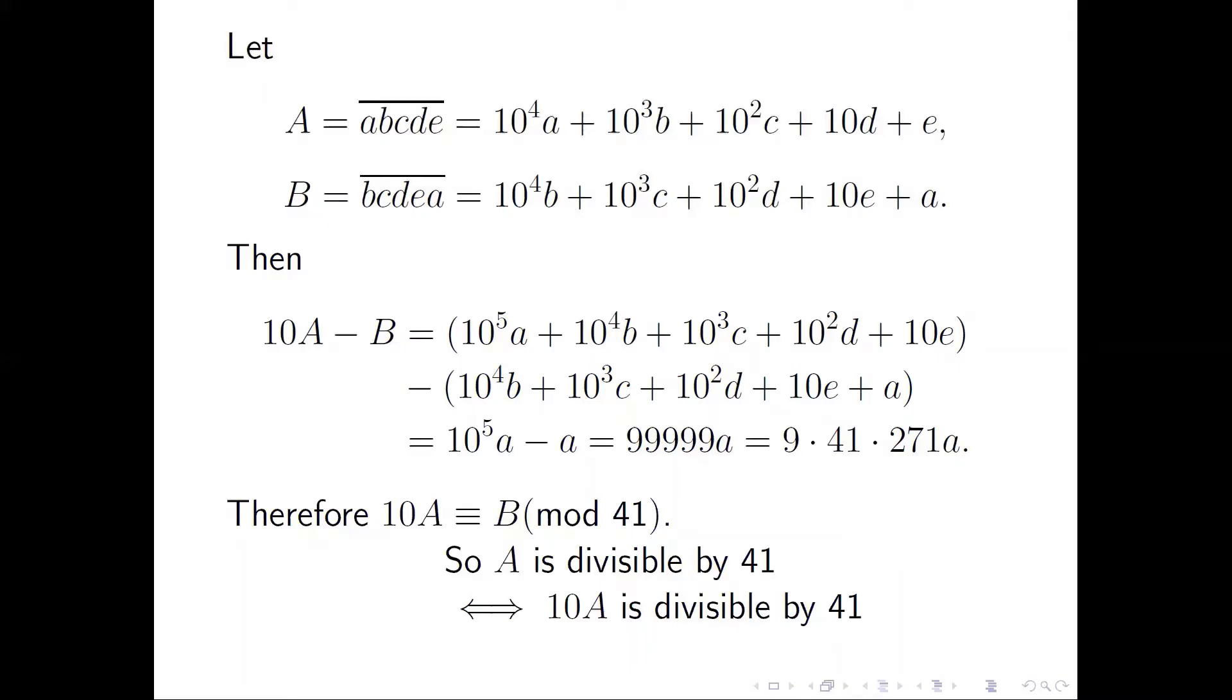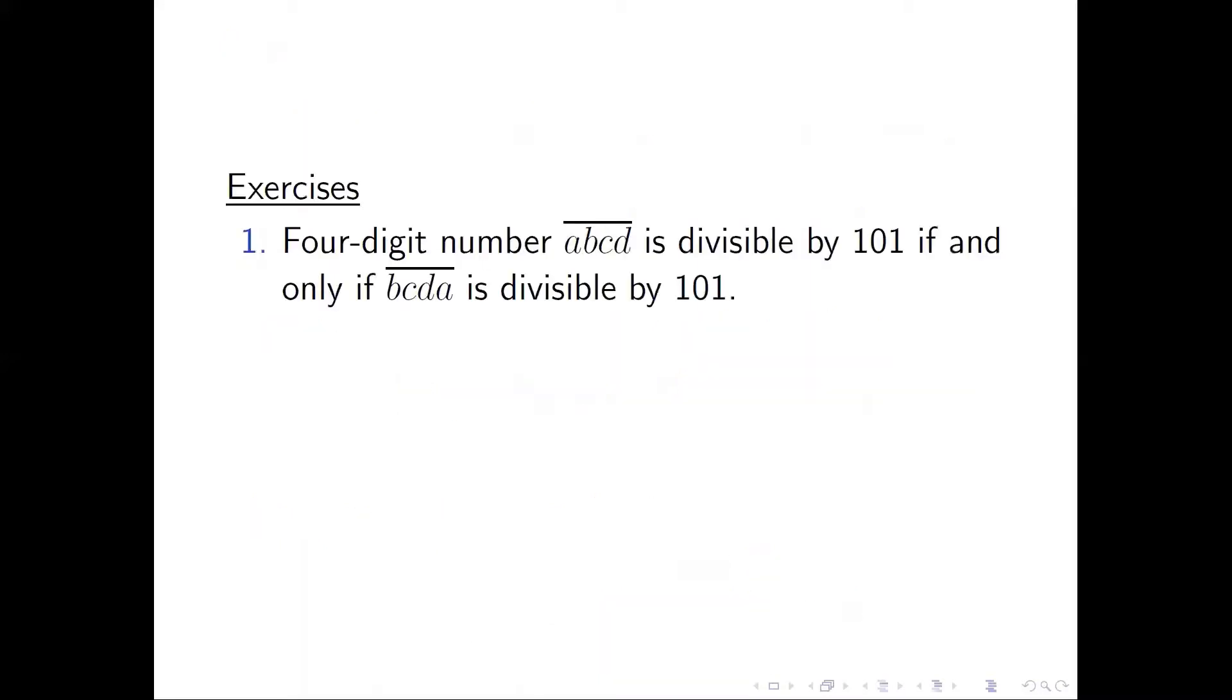But 10A is congruent with B, so B is divisible by 41, and we are done. So A is divisible by 41 if and only if BCDEA is divisible by 41.